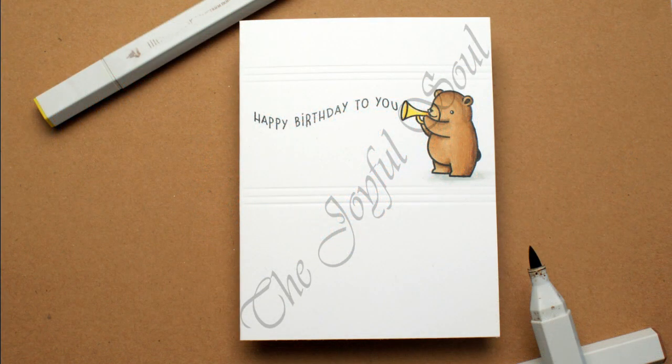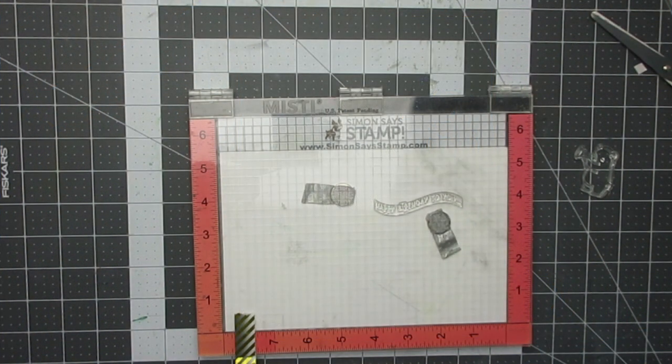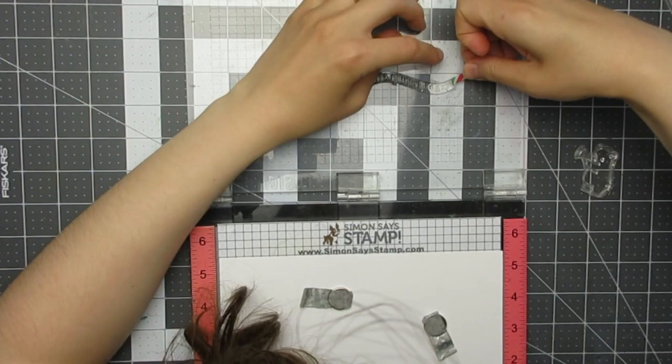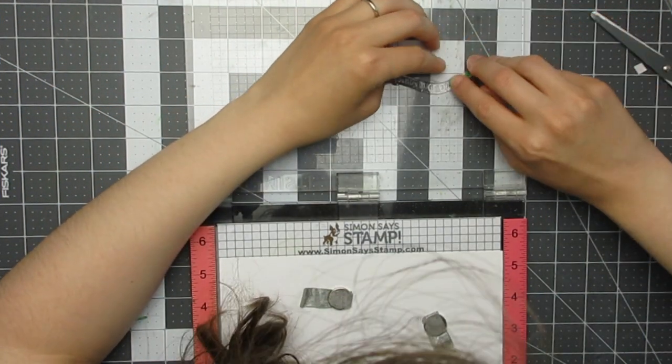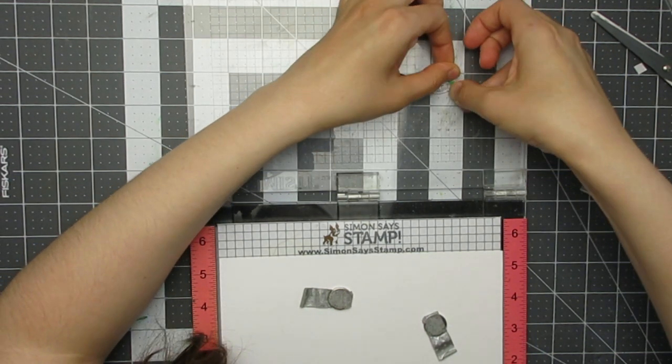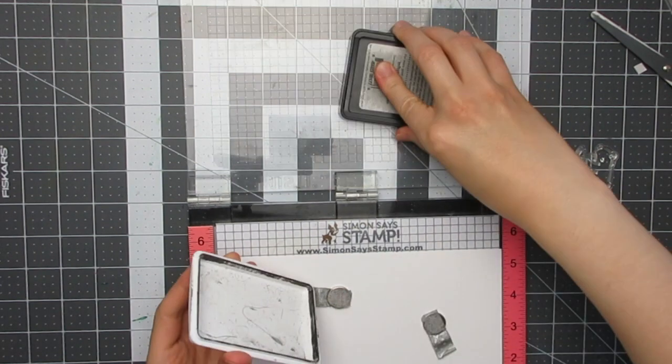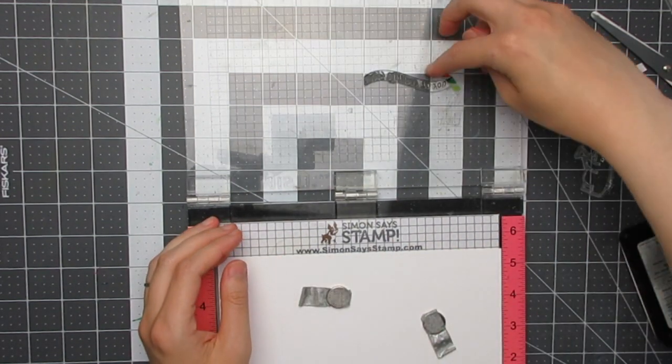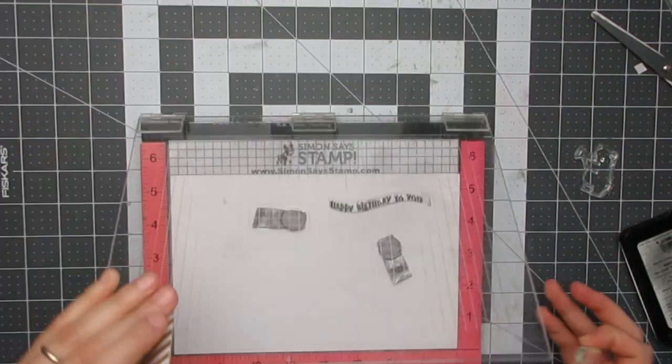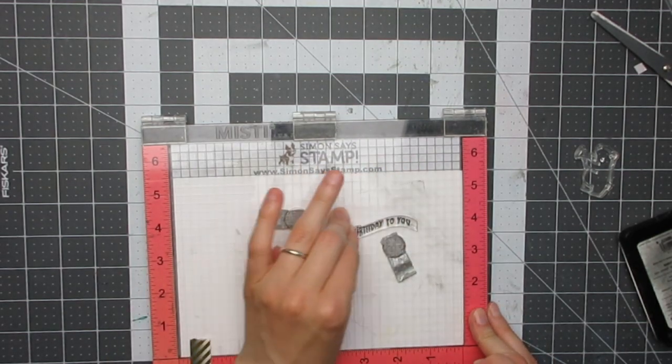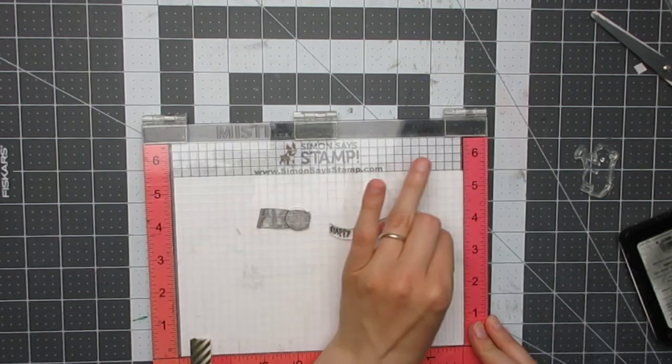I'm going to start with a very clean and simple card. I'll be stamping the Happy Birthday to You stamp. I'm masking off the ellipsis, the three dots at the end, because it was making the sentiment slightly too long for what I wanted to do and I thought it worked better without it, so I just used a little bit of washi tape for masking that off.